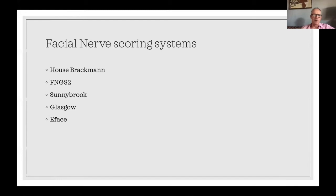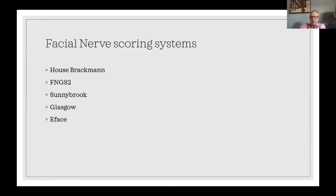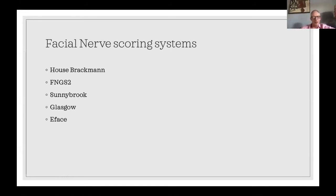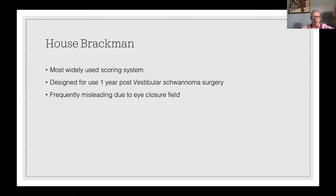There are lots of facial nerve scoring systems. In practice we use the Sunnybrook score in our facial nerve clinic because it's a better way of monitoring what's happening, particularly with reference to synkinesis. But in reality there's only one scoring system really in widespread use, which is the House-Brackmann scoring system — or the bastardized version of it that's become widespread — and that is the one that every A&E doctor and neurosurgeon thinks they know, and hopefully every ENT surgeon does know.